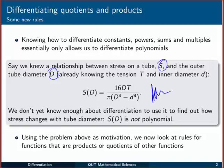Say we had this function: S(D) equals 16DT over π times (D⁴ - d⁴). Here our variable is capital D, and you can see it occurs both on the top and on the bottom of a fraction. We can't simplify it down to the kind of function we know how to differentiate, a polynomial. So we don't know enough about differential calculus yet to find out how stress changes with tube diameter, because S(D) is not a polynomial.